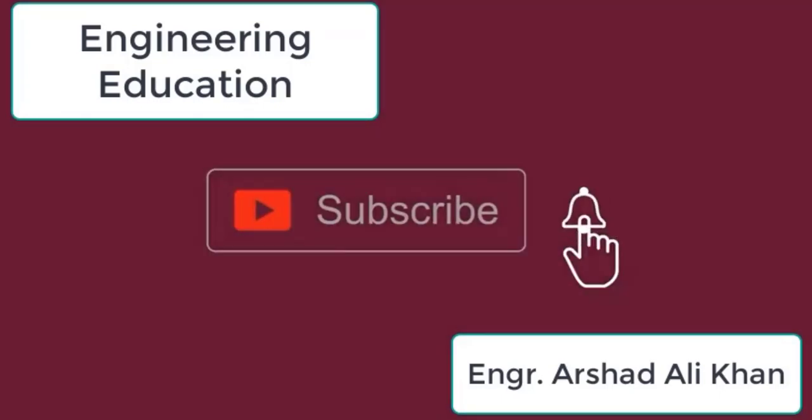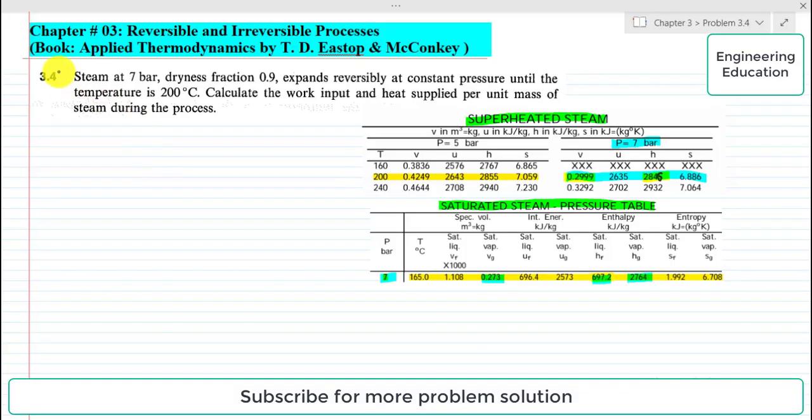Hello students, welcome to my channel Engineering Education. Please subscribe to my channel, thank you. In this video we are going to solve Problem 3.4, Chapter 3, Reversible and Irreversible Processes from the book of Applied Thermodynamics by T.D. Eastop and McConkey.